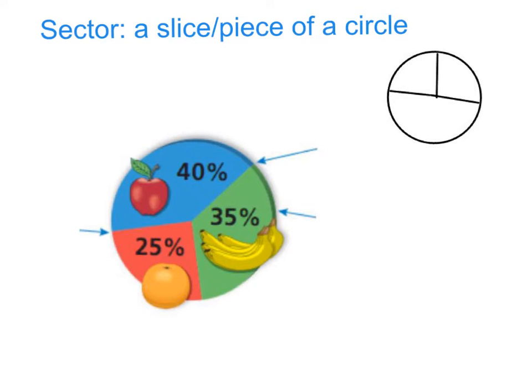Another vocab word you need to know is a sector. The definition of a sector is it is a slice or piece of a circle. If I look at the circle graph down here, there are three sectors - this blue sector, this green one, and this red one. Same thing up here, three sectors. It's basically like a section of the circle graph. That's just another quick vocab word you need to know.